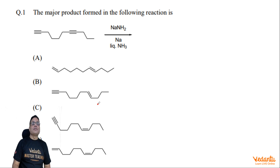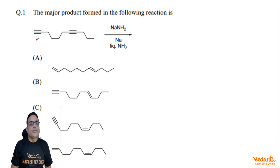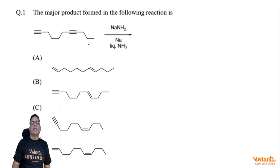This question says the major product formed in the following reaction is. You see, there are two triple bonds, and total number of carbons are 11. One triple bond is terminal and the other triple bond is non-terminal. And you know it is a Birch reduction, right?